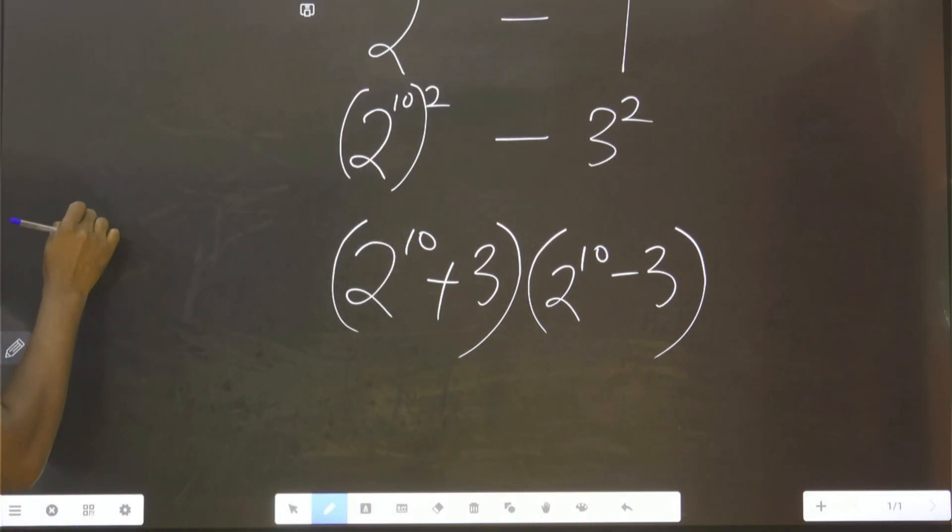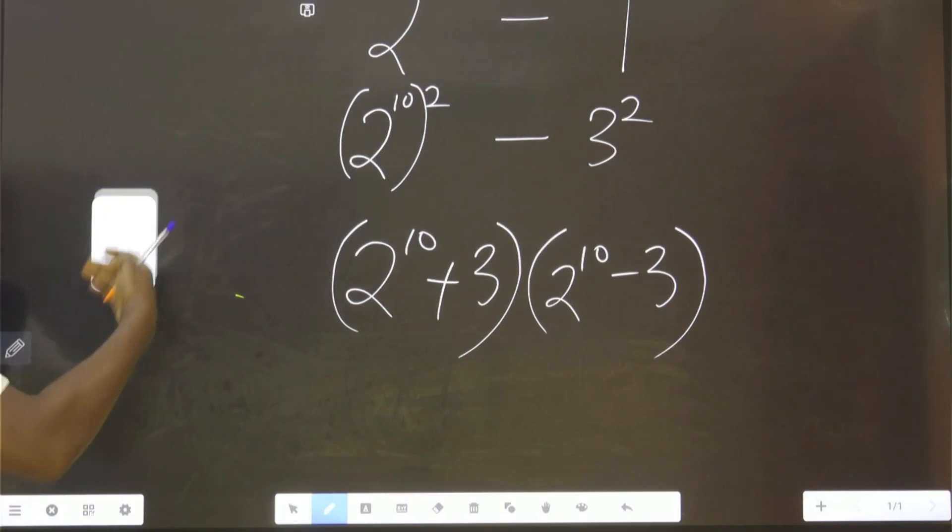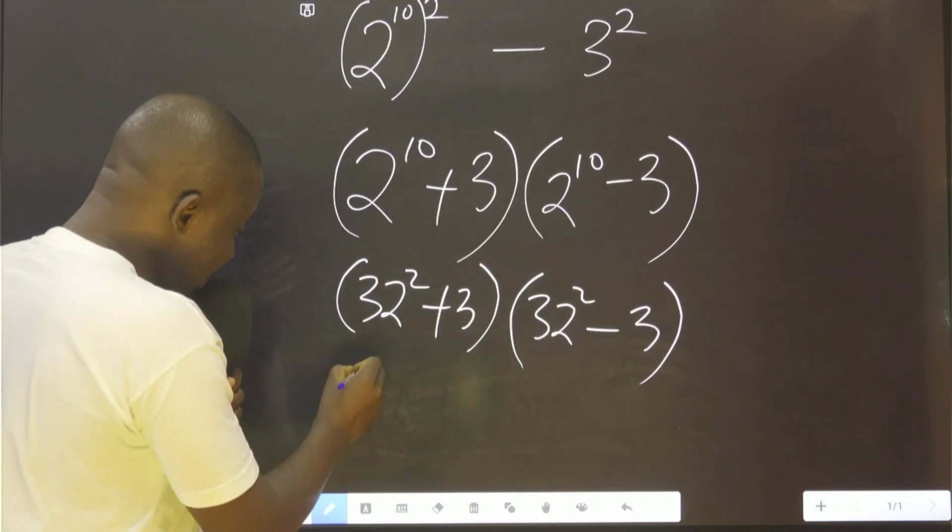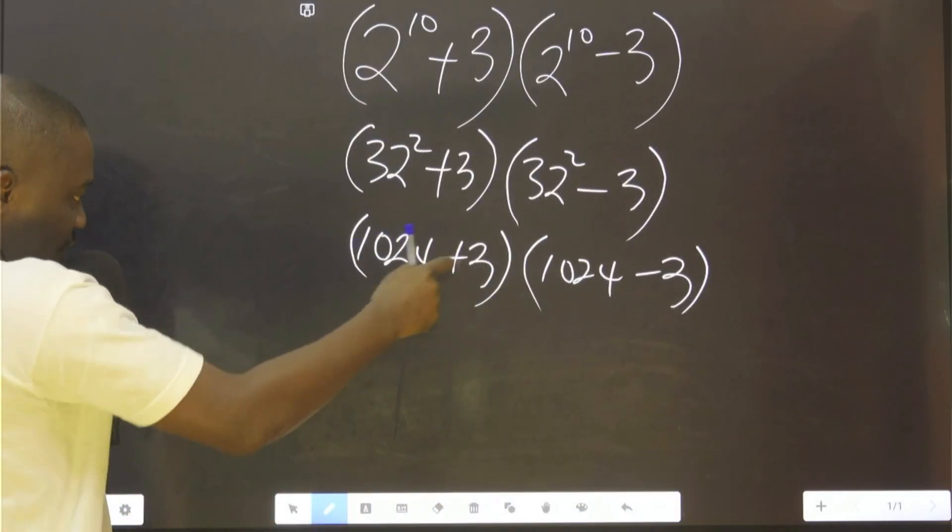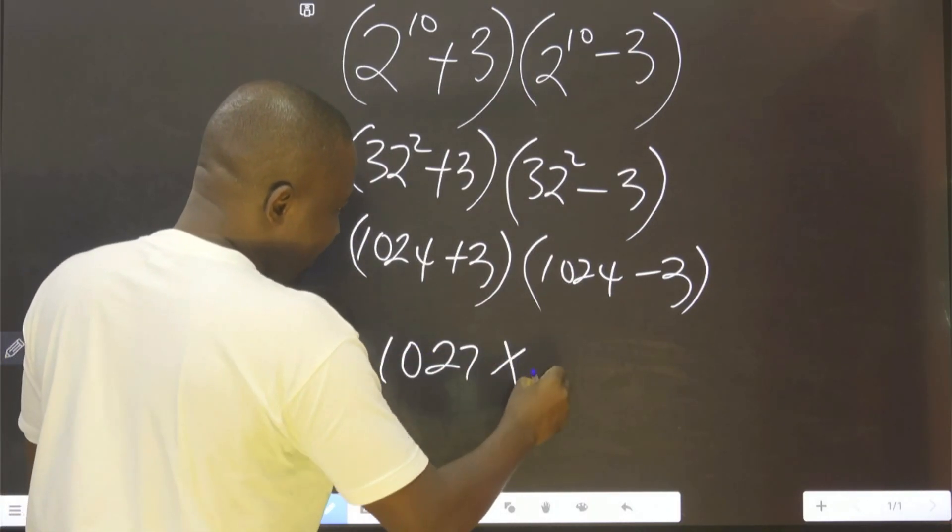I said 2^10, you agree with me, it's also equal to (2^5)². So this is 32 raised to power 2. What is 32 raised to power 2? That is 1024. You agree with me, this will give us 1027 multiplied by 1021.